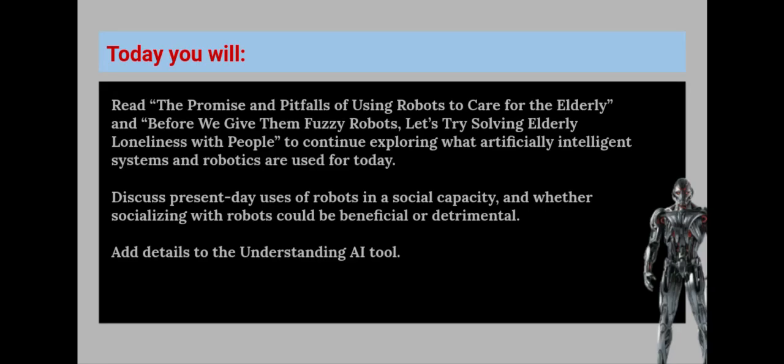Today, you will read 'The Promise and Pitfalls of Using Robots to Care for the Elderly.' And before we give them fuzzy robots, let's try solving elderly loneliness with people, to continue exploring what artificially intelligent systems and robotics are used for today. You will also discuss present-day uses of robots in a social capacity and whether socializing with robots could be beneficial or detrimental. You will also add details to the Understanding AI tool.